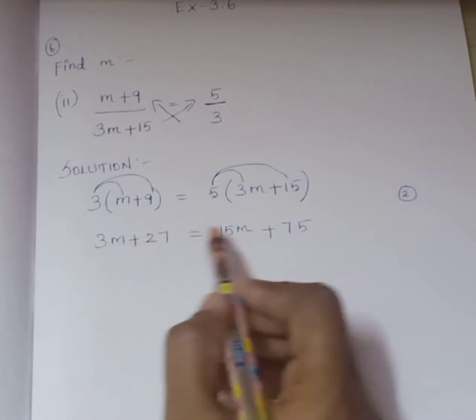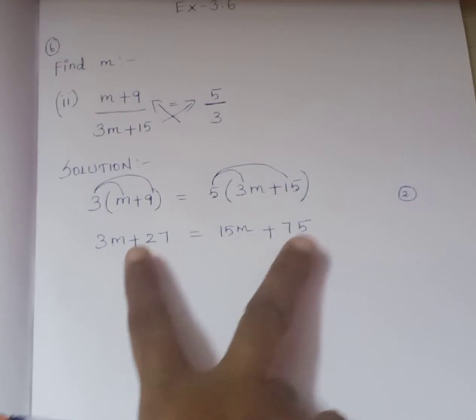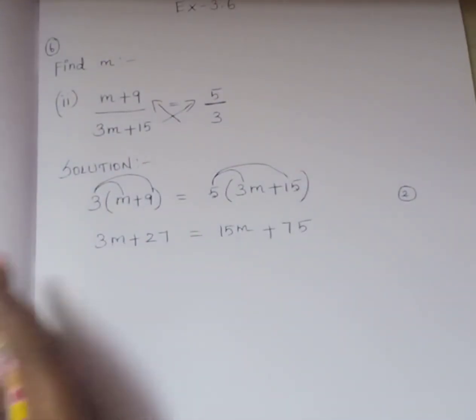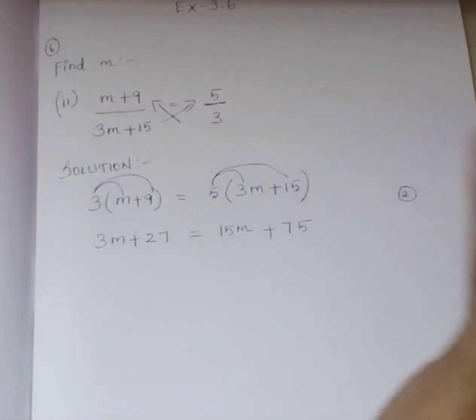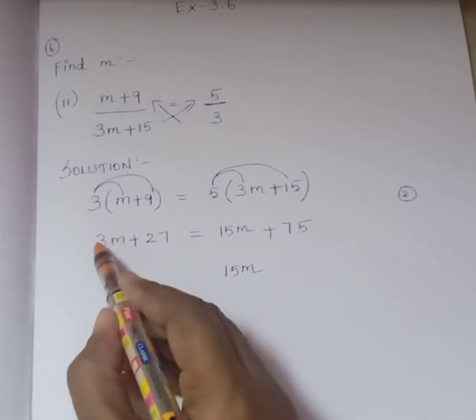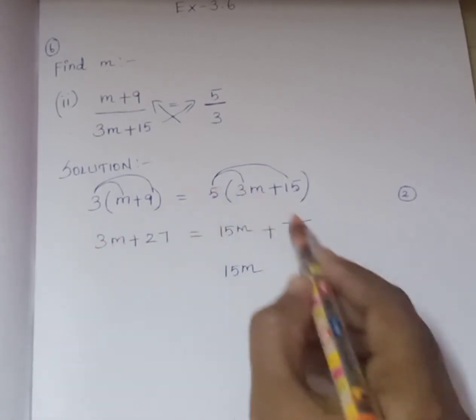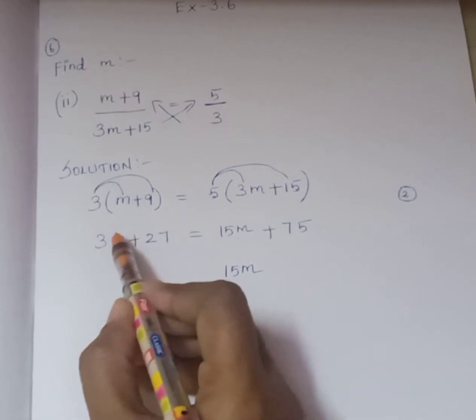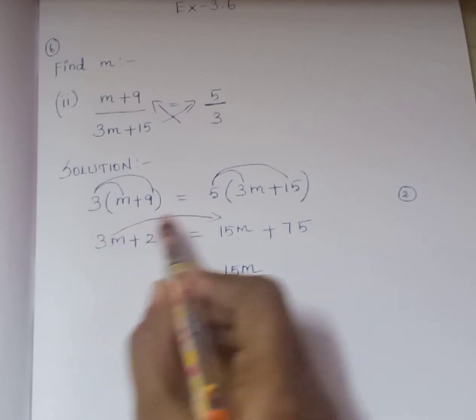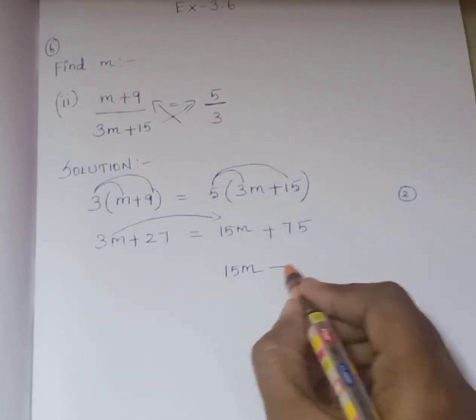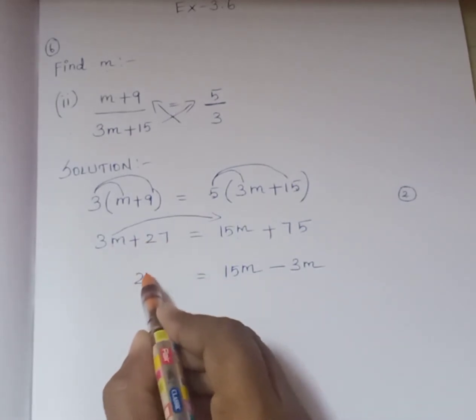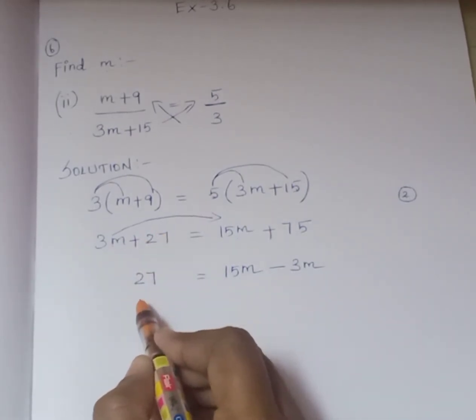We are going to find the m value and we have two m terms and two constant terms. I am going to bring m terms to one side and constant terms to the other side. So bring this plus 3m to the right-hand side. Plus term will be changing to minus 3m equals 27.